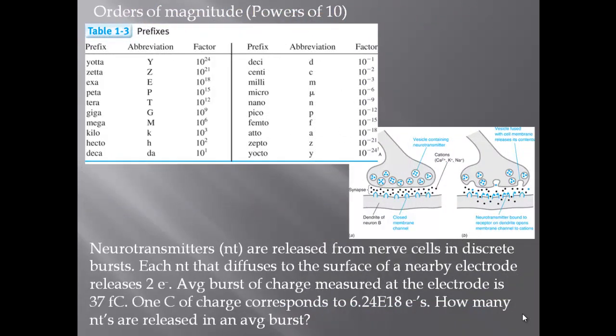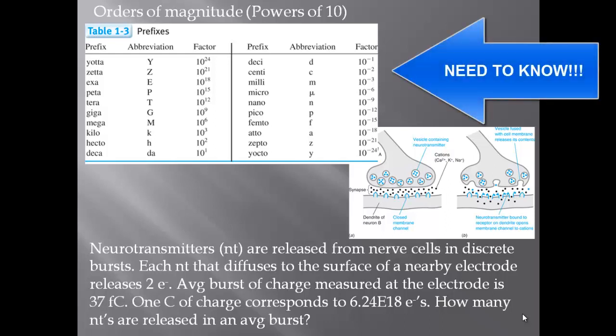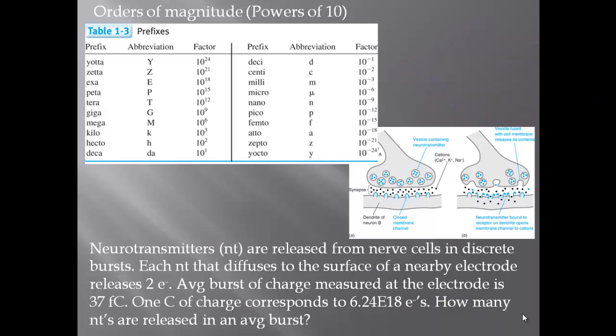We will be using these units this semester, so I urge you to get to know them very well — almost every problem will use them. If you've taken my Chem 231 general chemistry class, you know these prefixes are extremely important, and even more so in this class. The powers of 10 — orders of magnitude — will not be given to you on the exam. This is a more expanded list than general chemistry, going all the way from yotta to yocto.